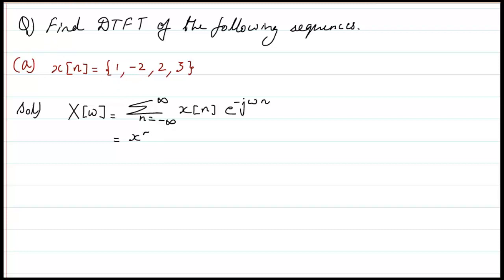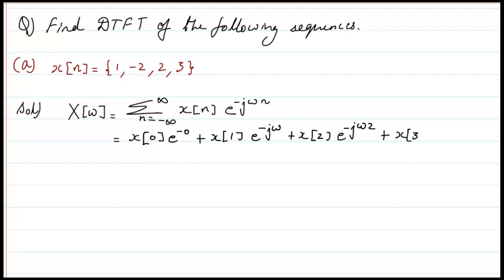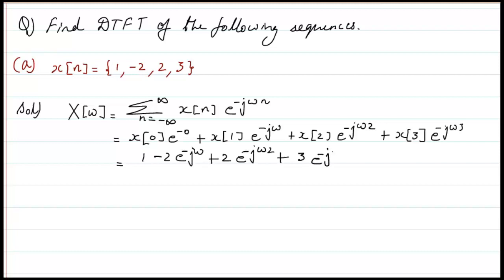Based on that, I will write x(0) e^0 + x(1) e^(−jω) + x(2) e^(−j2ω) + x(3) e^(−j3ω). Substituting the values: x(0) = 1, so 1 × e^0 = 1. The result is: 1 − 2e^(−jω) + 2e^(−j2ω) + 3e^(−j3ω).